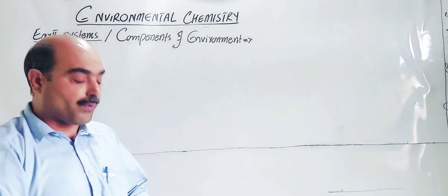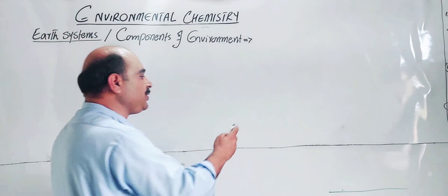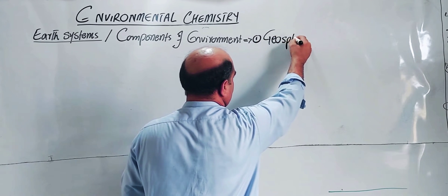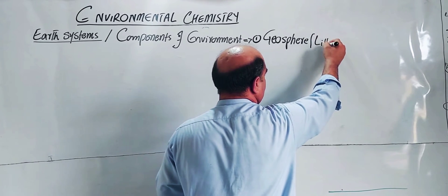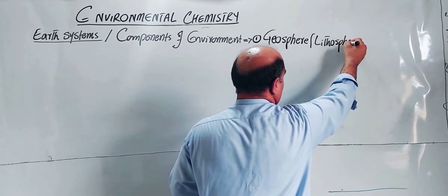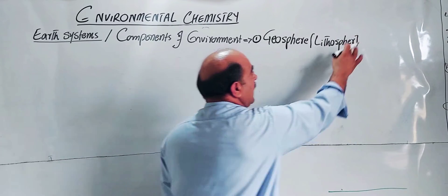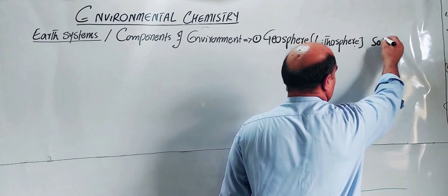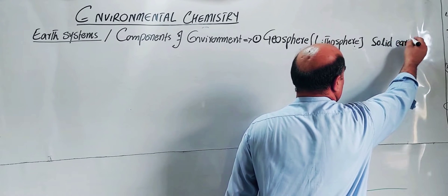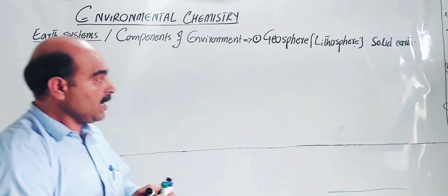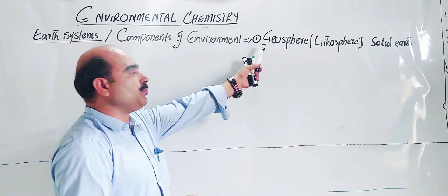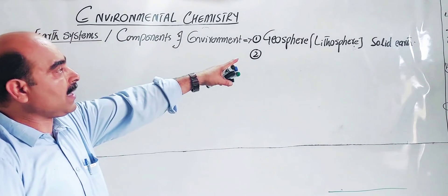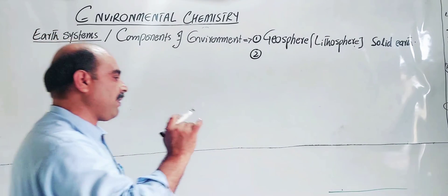The first component is the Geosphere, also called the Lithosphere. The Lithosphere is the solid sphere of the earth — solid earth. It includes the earth, rocks, mountains, and other solid material. Geo means earth, so Geosphere or Lithosphere refers to the solid part of the earth.